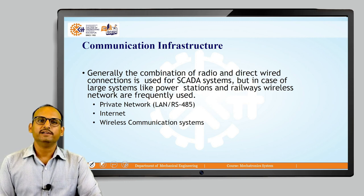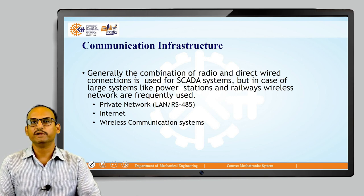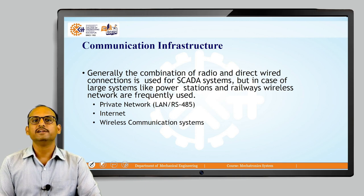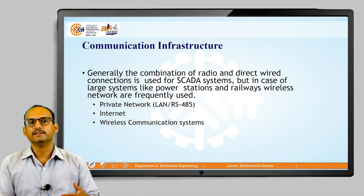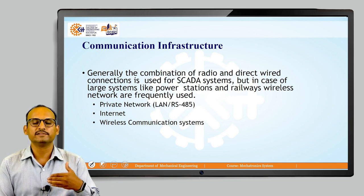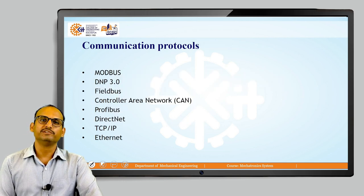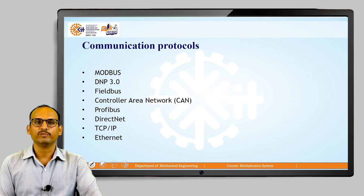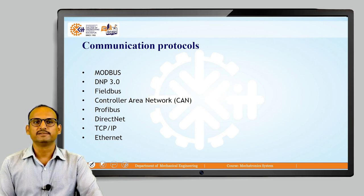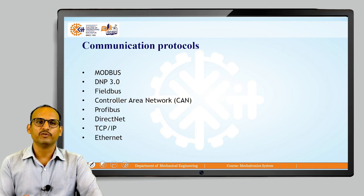The communication infrastructure generally combines radio and direct wired connections. However, in large systems such as power stations or railway networks, wireless networks are frequently used because they are more reliable when wired or radio connections fail. Private network LANs, the internet, or wireless communication systems are used. Different communication protocols used in these systems include Modbus, DNP3.0, Fieldbus, CAN (Controller Area Network), Profibus, DirectNet, TCP/IP, and Ethernet protocols.